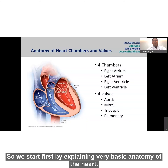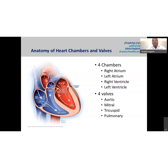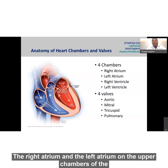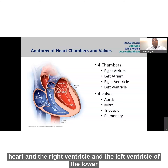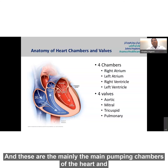We start first by explaining a very basic anatomy of the heart. The heart basically has four chambers and four valves. The right atrium and the left atrium are the upper chambers of the heart. The right ventricle and the left ventricle are the lower chambers, and these are the main pumping chambers of the heart.